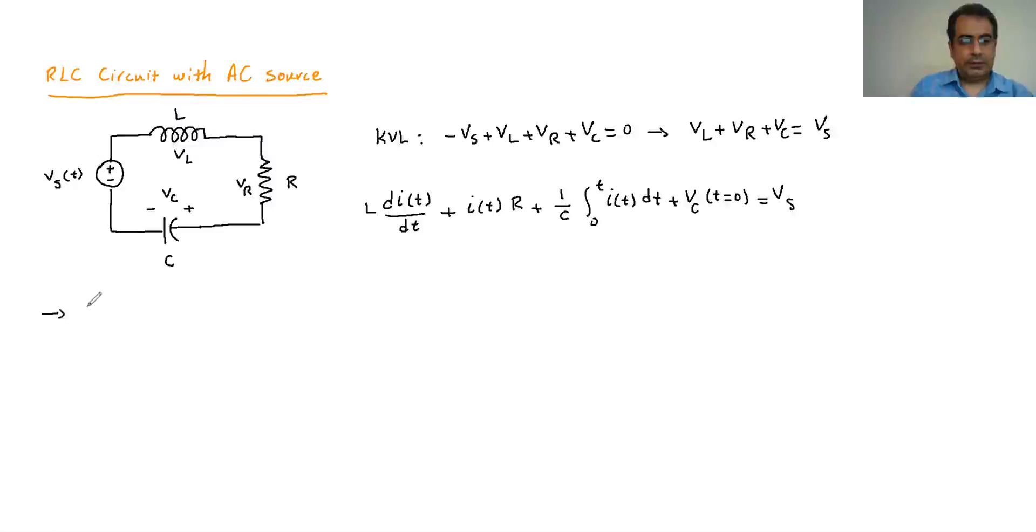So what we are gonna get is gonna be L d²I(t) over dt squared, the second derivative, then it's gonna be R dI(t) over dt. And then I'm gonna have for this one it's gonna be one over C. If I get a derivative of that, it's gonna be just I(t). And for this part it's gonna be zero. So this constant is gonna become,